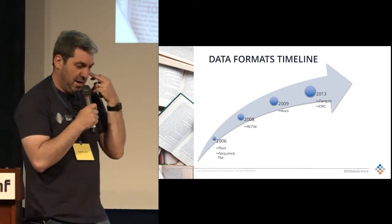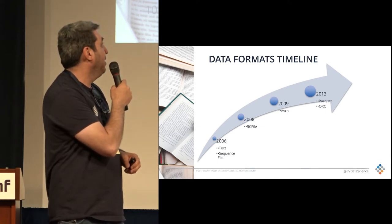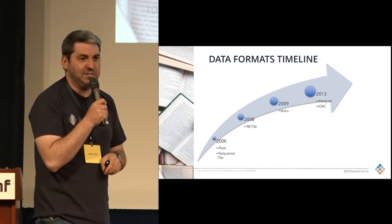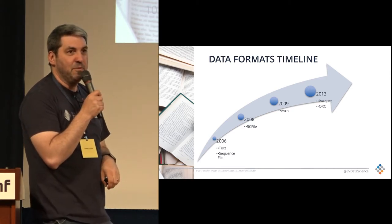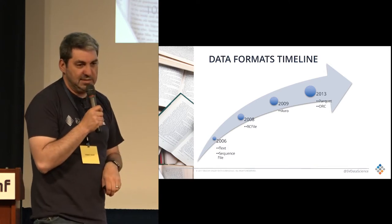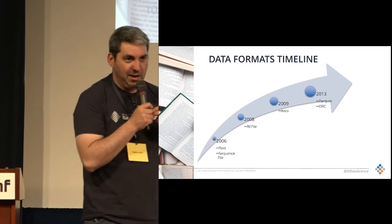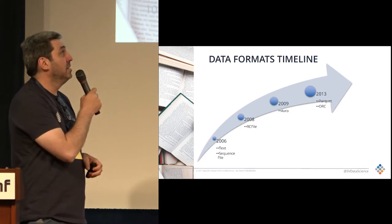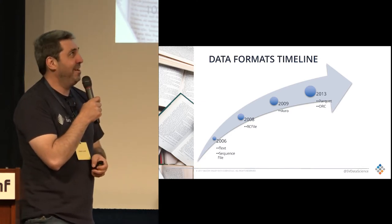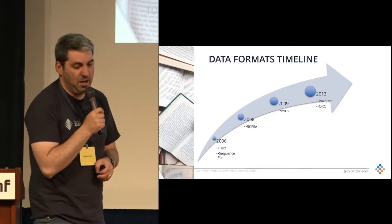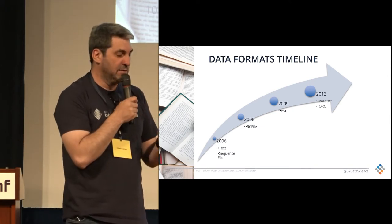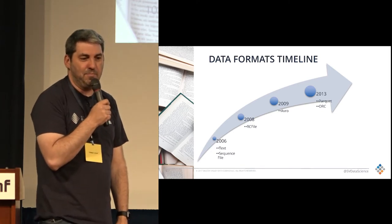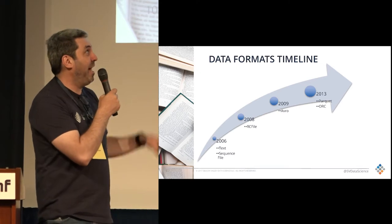Let's get into the data formats. Here's a little timeline. Around 2006 — I was working at Yahoo when Doug Cutting and those guys were doing Hadoop — text files and sequence files came into use. Then around 2008 we had RC files, 2009 Avro files, a lot of it coming from what Google and Facebook were doing. In 2013 we have Parquet, and Owen O'Malley at Hortonworks was doing ORC as well. And there's the future direction with Arrow, which is an interesting concept.